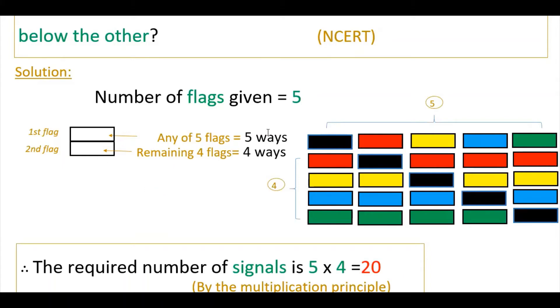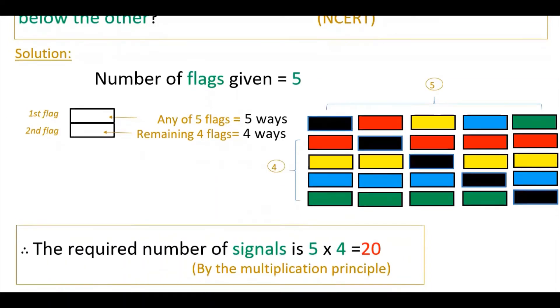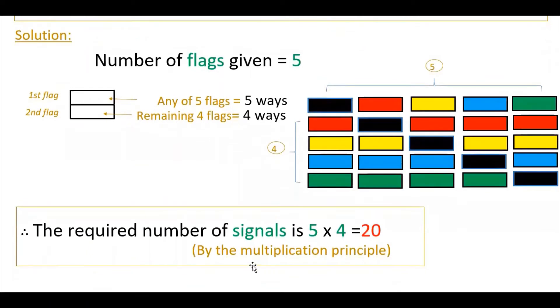There are five ways to fill the first box and four ways to fill the second box. By using the multiplication principle, the required number of signals is 5 × 4, which equals 20.